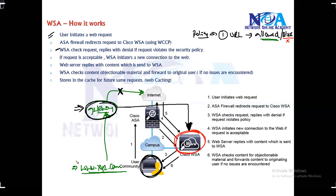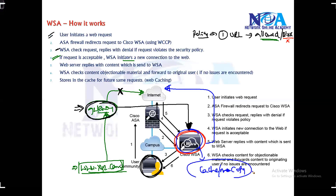Now if it is allowed — let's say you are trying to access a URL or website that is allowed — the next thing is if the request is acceptable, the WSA is going to initiate a new connection onto the web. Before doing that, it will check whether it has a copy of that particular information in its local temporary memory. If it does, it will simply forward it to the user. Assuming it doesn't have a cached copy, the WSA will initiate the request on behalf of the user.